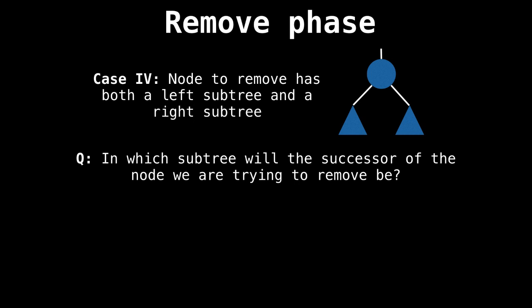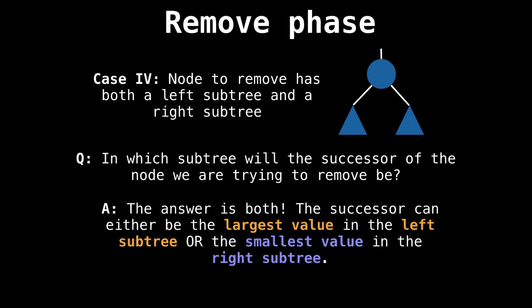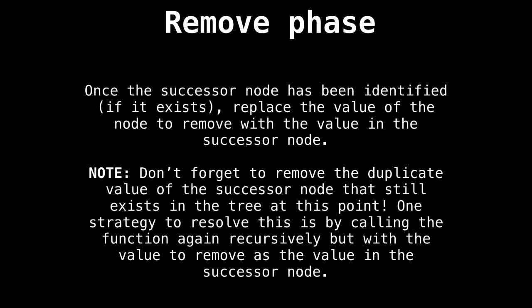The last case is when the node we're trying to remove has both a left subtree and a right subtree. The question in this case is: in which subtree will we find the successor of the node we're trying to remove? Surprisingly, or not surprisingly, the answer is both. The successor can either be the largest value in the left subtree or the smallest value in the right subtree. Once the successor node has been found in either that left or right subtree, we replace the value of the node to remove with the value in the successor node.